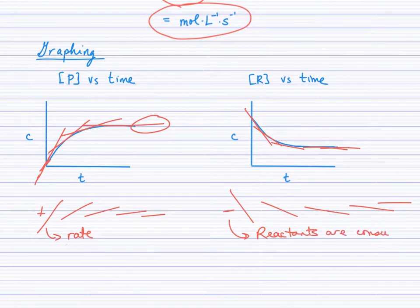A negative slope because reactants are consumed. The steepness gives us the magnitude and the sign, the fact that it's positive or negative relates to the idea that products are produced and reactants are consumed.